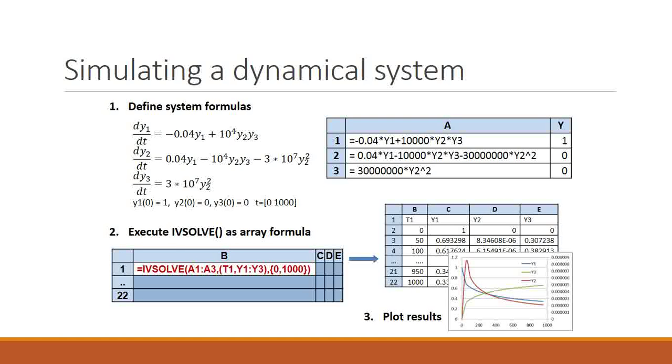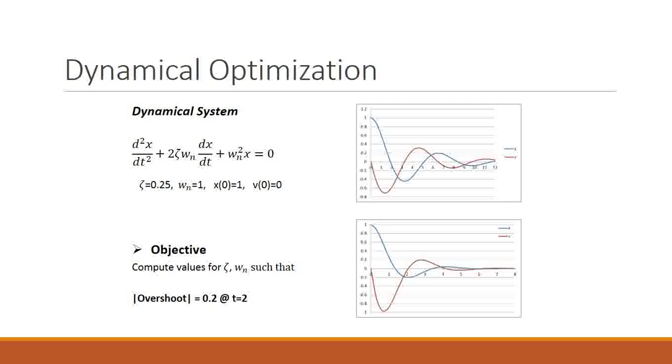To demonstrate the power of our product, let's take a look at a dynamical optimization problem. The system defined on the screen has the behavior shown in the top graph. The objective is to compute values for the parameters zeta and omega, such that the overshoot of the system has a value of 0.2 at time equals 2. The target system behavior is shown in the bottom graph.